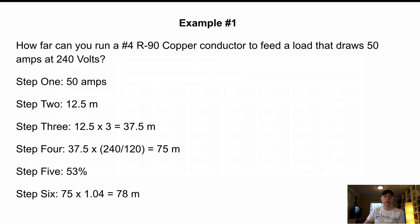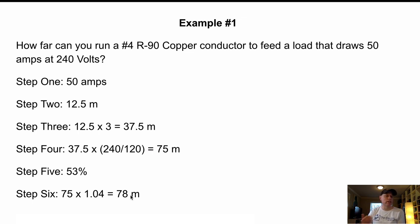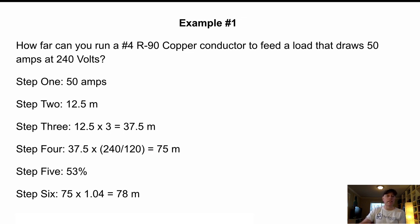So what we've got here is we can take that 75 meters and multiply it by 1.04 to get 78 meters. And there you go. You can run a number four R90 copper conductor to feed a load that draws 50 amps at 240 for 78 meters. For you Americans out there, you're just going to have to multiply that by 3.281 to get the feet. So you're looking at a couple hundred feet there. Okay, that's example one.